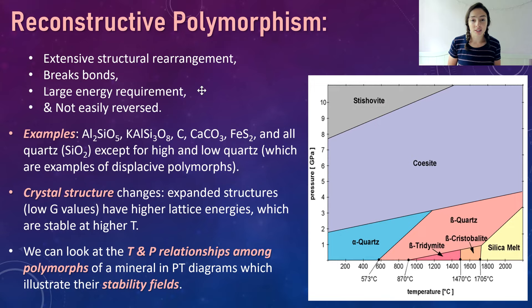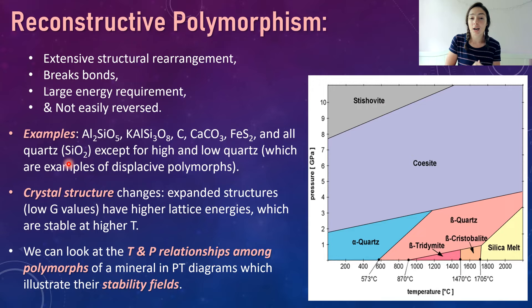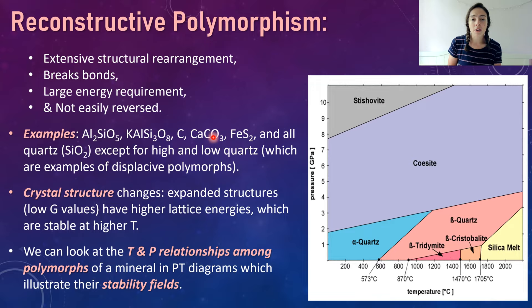Common minerals exhibiting reconstructive polymorphism include feldspar polymorphs, K-spar (potassium feldspar) polymorphs, carbon polymorphs like diamond and graphite, calcium carbonate polymorphs like aragonite and calcite, iron disulfide minerals like pyrite and marcasite, and quartz — except quartz also exhibits displacive polymorphism. Quartz has reconstructive polymorphs: stishovite, coesite, tridymite, and cristobalite. It also has alpha and beta quartz (low and high quartz), which are examples of displacive polymorphs we'll discuss later.